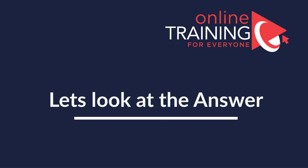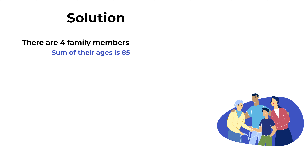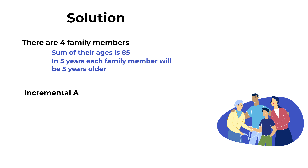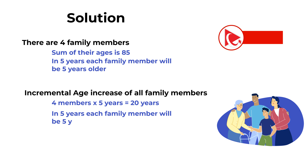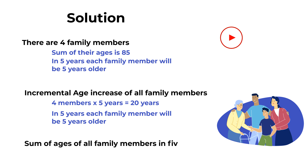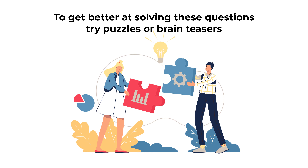What's interesting is that this problem is simpler than you think — the key is not to overthink it. There are four family members, and in five years each will be five years older. The incremental age increase is 4 × 5 = 20. So the sum of ages in five years is 85 + 20 = 105. The correct answer is choice D, 105.